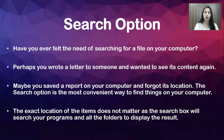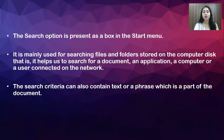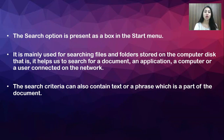Maybe you saved a report on your computer and forgot its location. The search option is the most convenient way to find things on your computer. The exact location of the items does not matter, as the search box will search your programs and all the folders to display the results. The search option is present as a box in the start menu and is mainly used for searching files and folders stored on the computer disk — it helps to search for a document, an application, a computer, or a user connected on a network. The search criteria can also contain text or a phrase which is part of the document.